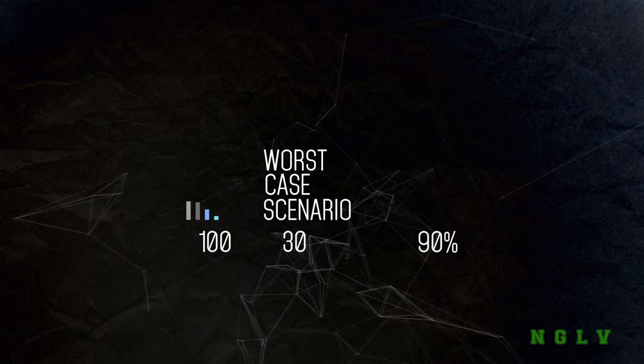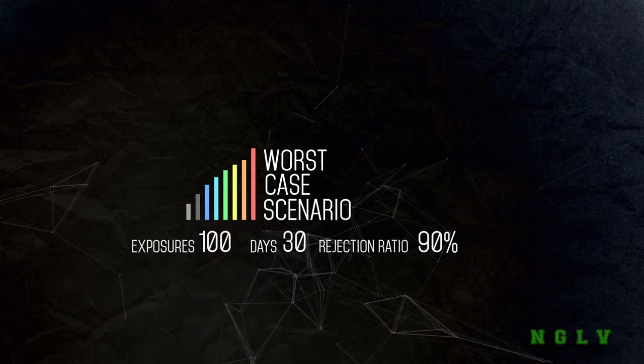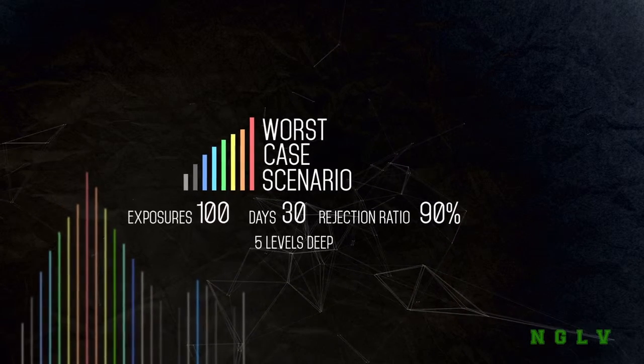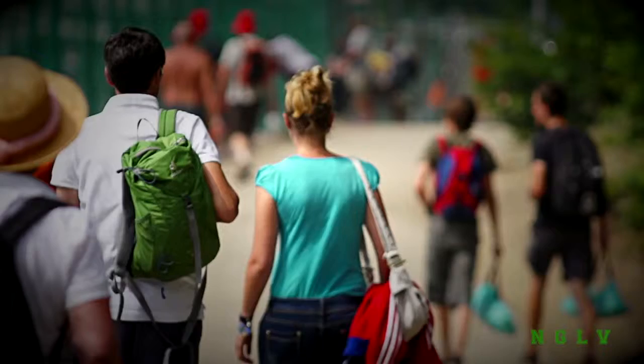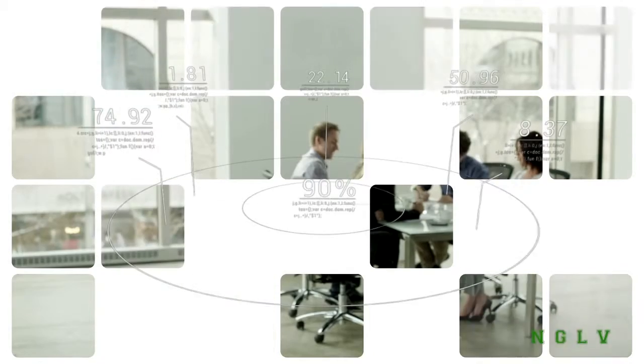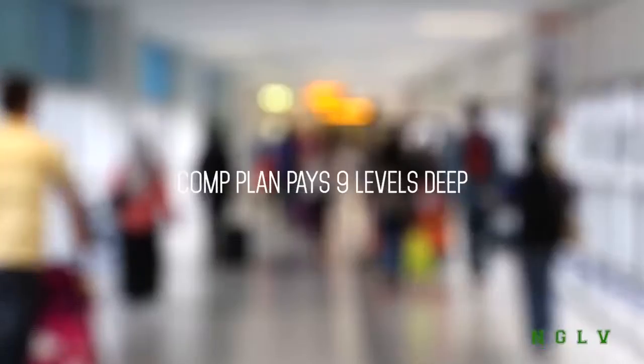Let's look at a worst-case scenario. Assuming that you create 100 exposures in the next 30 days with a very low response, that is, a rejection ratio of 90%. And in turn, every one of your new team members have the same rejection ratio of 90% through five levels deep, just to be conservative, even though the comp plan pays nine levels deep.